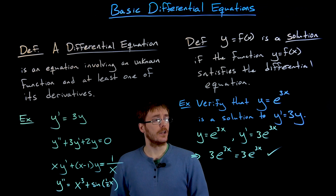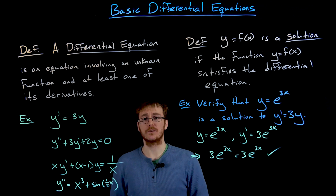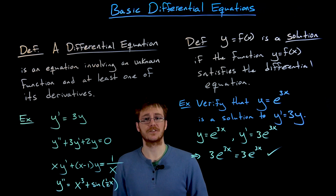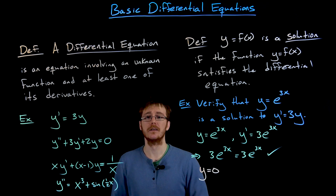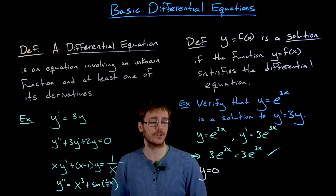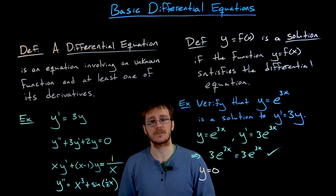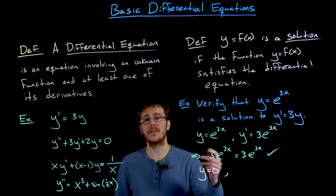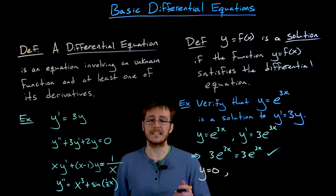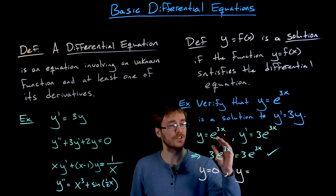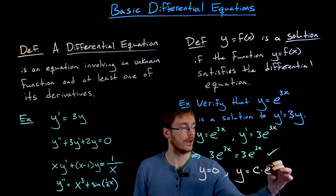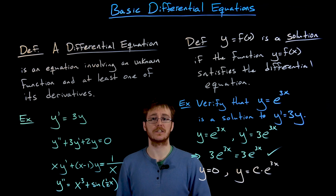y equals e to the 3x is not actually the only solution to this differential equation — there are infinitely many solutions. A much less interesting solution is the constant function zero: the derivative of zero is zero, and that equals three times zero, so y equals zero also technically satisfies this differential equation. More interestingly, any constant multiple of e to the 3x will also satisfy this differential equation, so that family of functions all represent solutions.